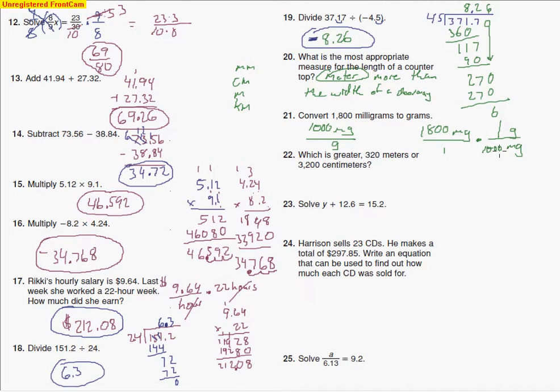Or I could say one gram is to a thousand milligrams. So you can see I'm dividing by a thousand. So that's going to move the decimal over 1, 2, 3 spaces. So my answer is 1.8 grams.